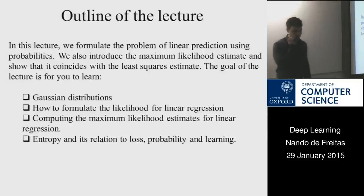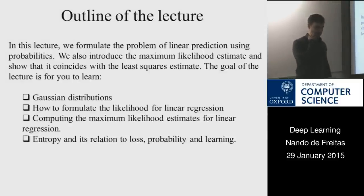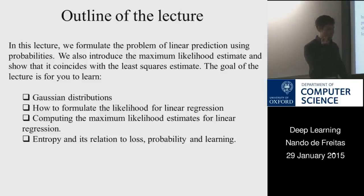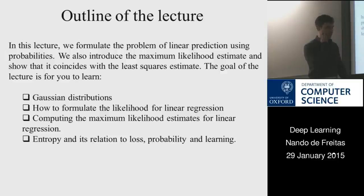To look at probabilities, we're going to revise Gaussian distributions — bell-shaped curves. I hope you went to the Wikipedia pages I asked you to last week. We're going to do a very fast revision, but if you find you're a bit shaky with concepts like covariance and expectation, then you do have to go back and revise. If you haven't learned them before, just read the Wikipedia pages.